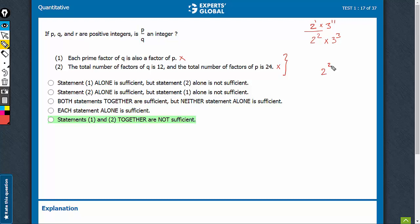However, if the numbers were something like this, 2 raised to power 2 into 3 raised to power 7, see, this has 24 factors, and this is 2 raised to power 2 into 3 raised to power 3. So this has 12 factors, this has 24 factors, both the conditions are being satisfied.